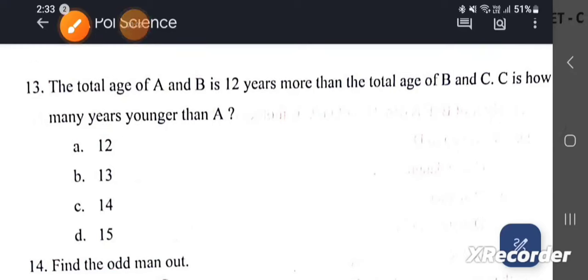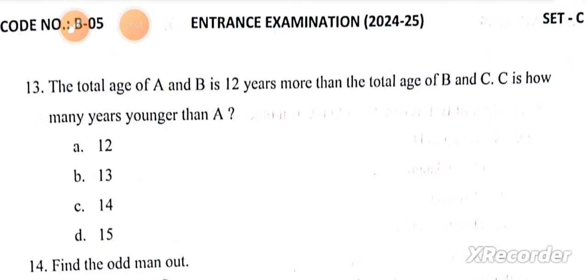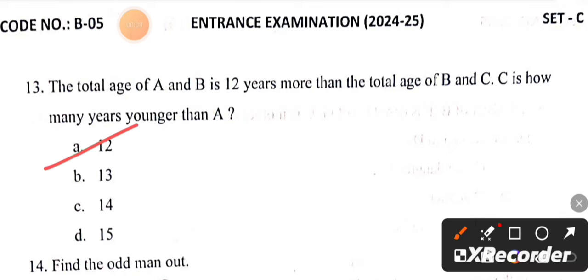Question number 13 says that the total age of A and B is 12 years more than the age of B and C. C is how many years younger than A? The correct answer is A, 12 years.